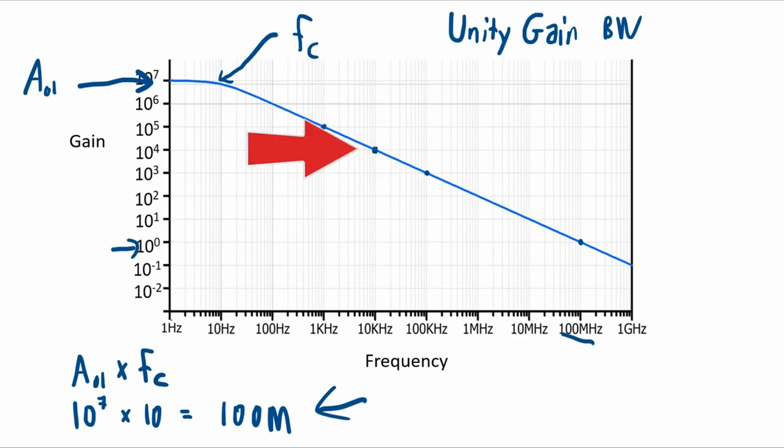Right there, the gain of 10,000 and a frequency of 10,000, a hundred megahertz. Every single point on that line, the value for the gain times a value for the frequency will give you 100 megahertz.